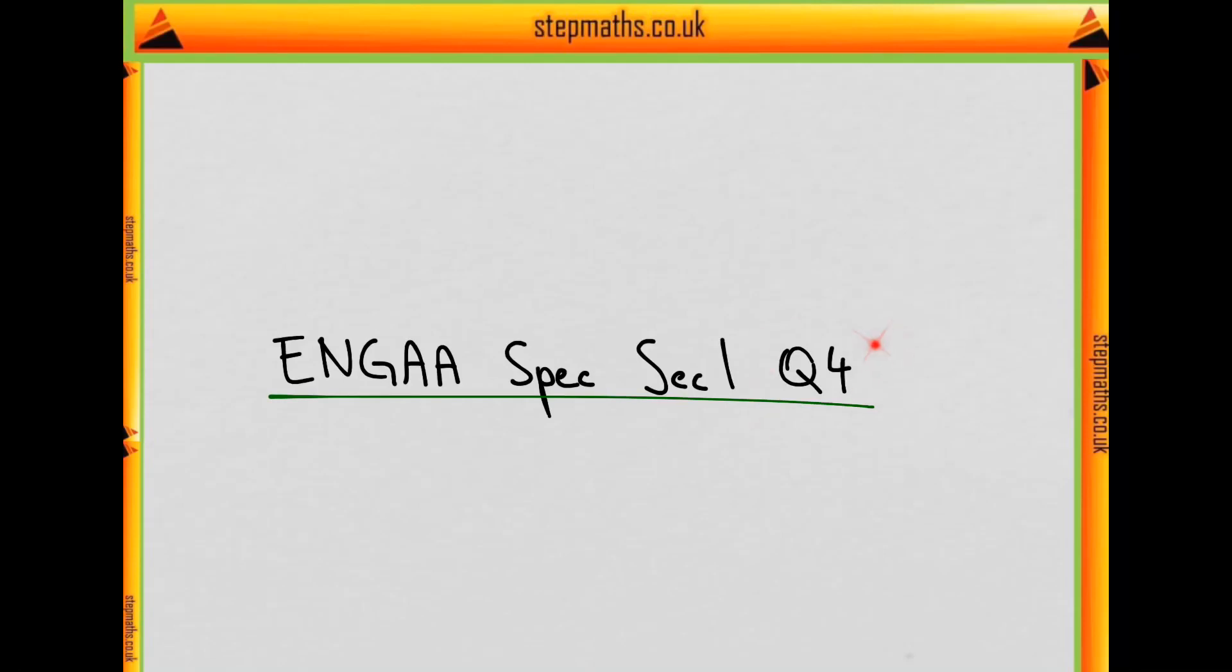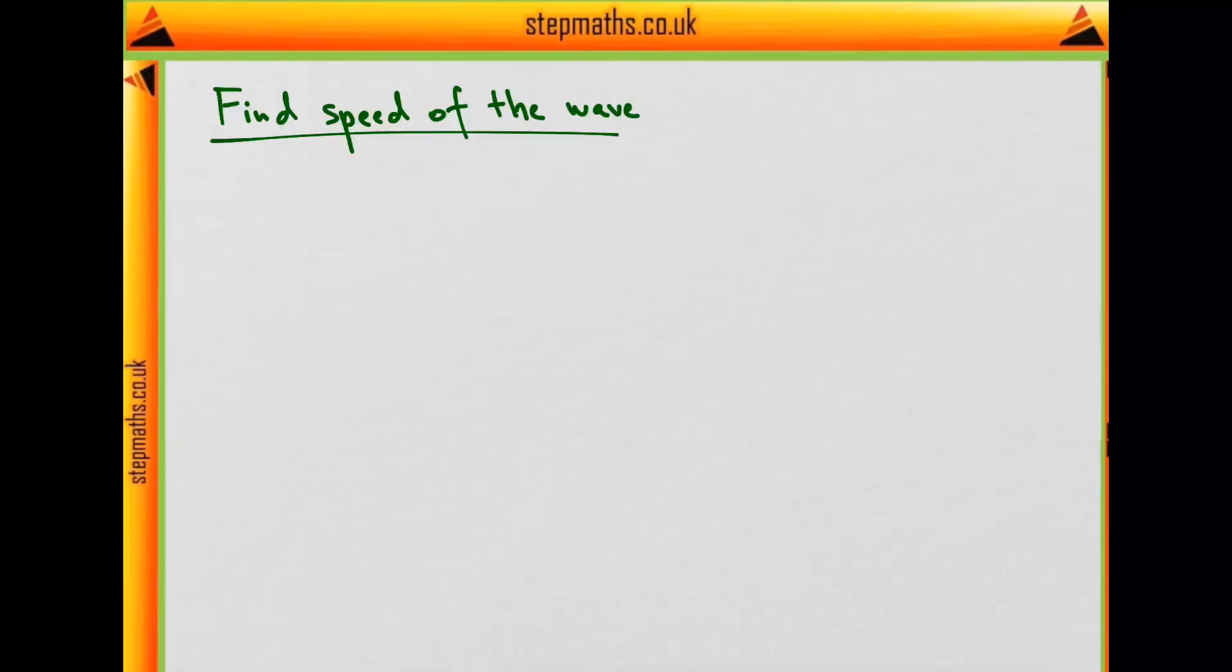In this video we are going to look at question 4 from the specimen paper. In this question we are supposed to find the speed of a wave, and we know two pieces of information about this wave.